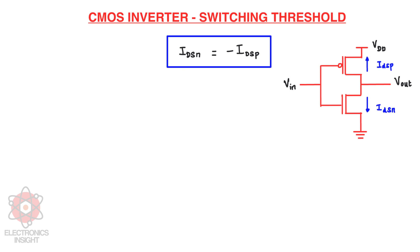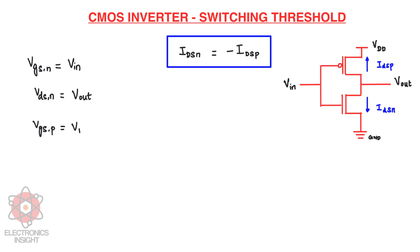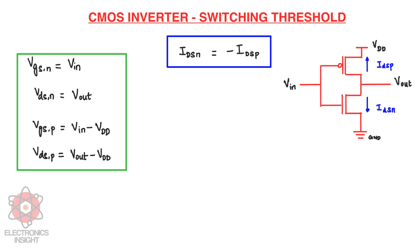VGSN is equal to VIN, and VDSN (the drain-to-source voltage of NMOS) is equal to VOUT. Since the NMOS source is connected to ground, we neglect the source voltage, giving us VIN and VOUT. A link to the previous DC transfer characteristics video is provided in the description. VGSP equals VIN minus VDD, and VDSP equals VOUT minus VDD. These equations help elaborate the drain-to-source currents of NMOS and PMOS.